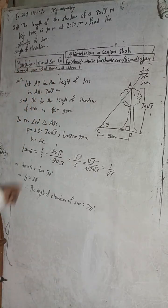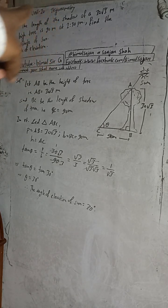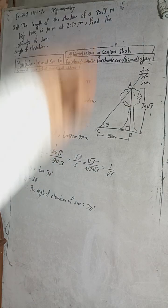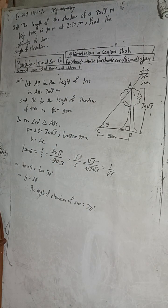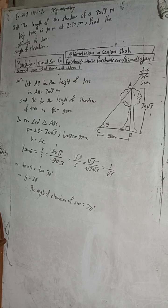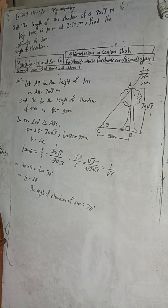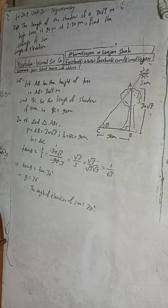The answer is 30 degrees, and in the book also the answer is given as 30 degrees. So dear students, note that the original question says find the altitude of the sun — that question is wrong. Altitude means the height of the sun, which we cannot find. The correct question is: find the angle of elevation of the sun. Therefore the angle of elevation of the sun is 30 degrees. If you found this video helpful, please share it with your friends and give a sweet comment.